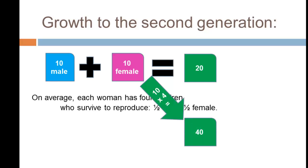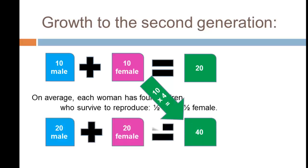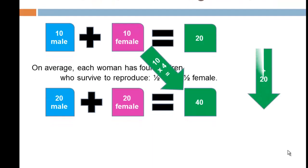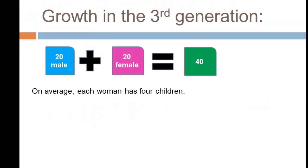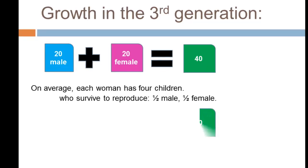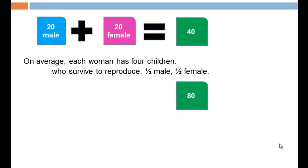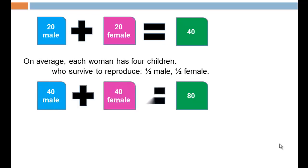We take the 10 women and multiply by four, giving us a population of 40 in the next generation — half male and half female. The increase from generation one to generation two is 20 individuals. In the third generation we take 20 females times four, and our population reaches 80: 40 males plus 40 females.